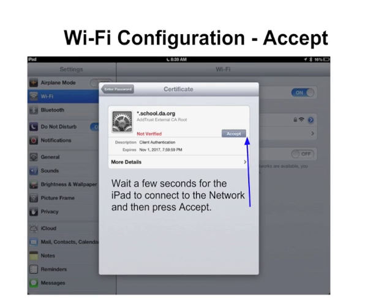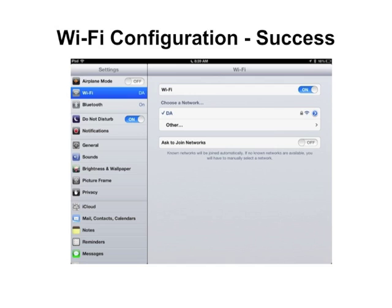It may take a few seconds, but you should have a certificate screen show up, which will ask you to accept. If you do not accept, you will not be able to connect to our protected network. This screen shows that you have been successful. You have a checkmark next to DA, and in the left-hand corner, you have a good Wi-Fi signal.